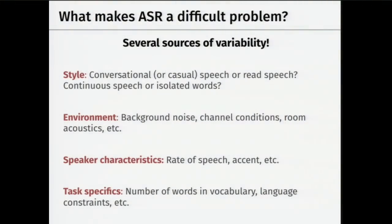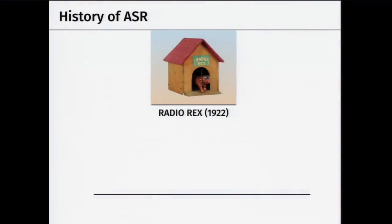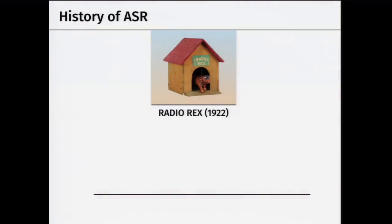Let's go through the history of ASR. The very first prototype was Radio Rex from the 1920s — a toy dog that jumps out of its kennel when you say 'Rex.' It's purely a frequency detector sensitive to energies around 500 Hz, which happens to be the frequency of the vowel sound in Rex. It's not doing any recognition, just frequency detection — a charming prototype.